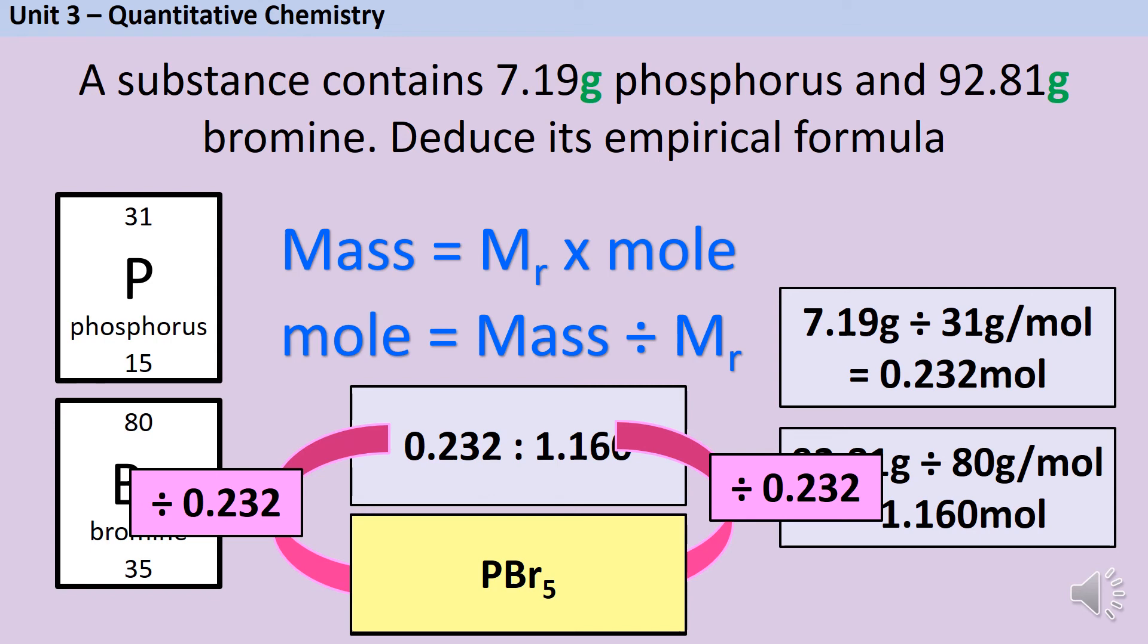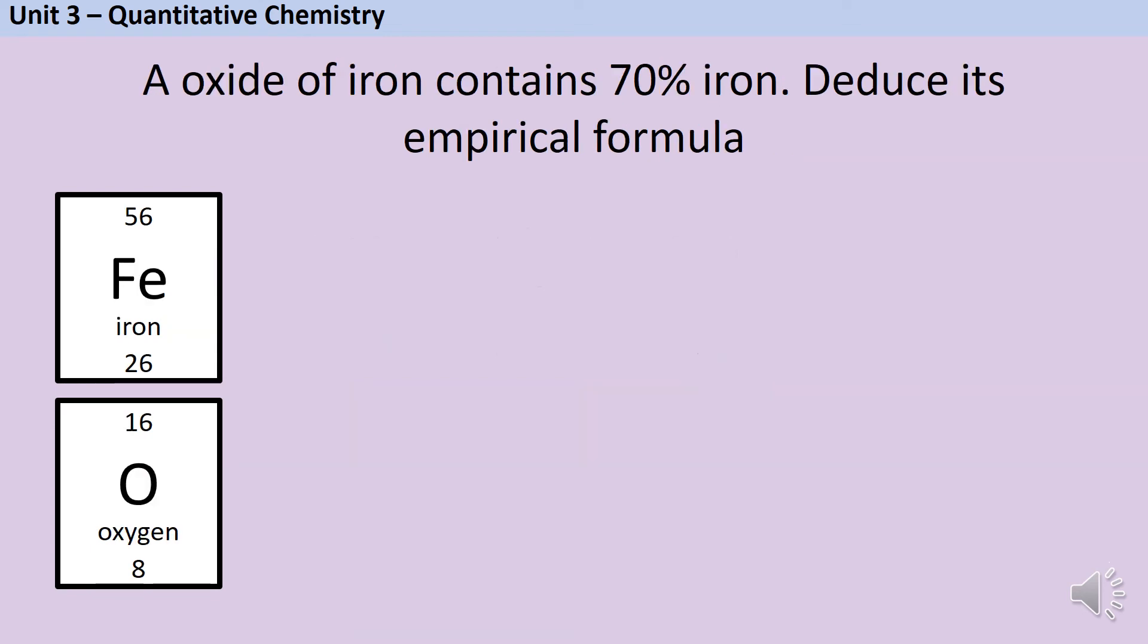Now let's have a look at one more way that we could make this trickier. Here we're given an oxide of iron that contains 70 percent iron. They haven't actually told me in the question how much oxygen is in the compound, but of course I'm expected to know that the total amount is 100 percent. So I can work out for myself that if the compound is 70 percent iron then it's 30 percent oxygen.